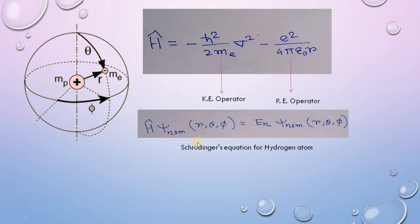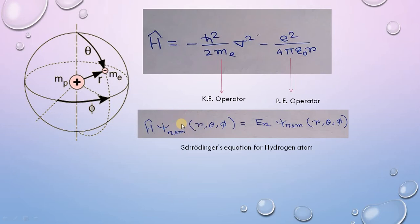We can use the Schrödinger equation, H psi equals E psi, to solve the hydrogen atom model system and derive different parameters. By using this equation we can determine the energy for any given nth level if we know the exact expression of the Hamiltonian operator and the wave function. The total wave function psi depends upon three quantum numbers: n, the principal quantum number; l, the angular momentum quantum number; and m, the azimuthal quantum number.